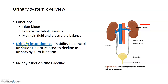When we think about age-related changes in the urinary system, we often think about urinary incontinence — the inability to control urination. However, this is not actually related to a decline in urinary system function, but rather to a decline in the skeletal muscle function that controls the release of urine from the body.